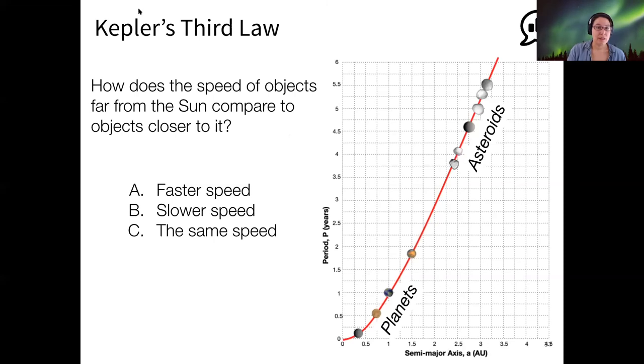Just a conceptual question, maybe using this graph. How does the speed of objects far from the Sun compare to objects close to the Sun? I see most votes for B, that the farther the planet is, the slower a speed it has. The way that we can get this from this graph is that if an object way up here, for example, has a period of five and a half years, that's a very long time that it takes to orbit, so it's going very slowly.